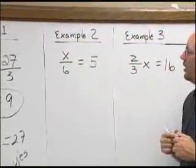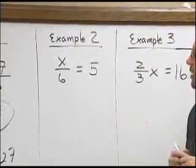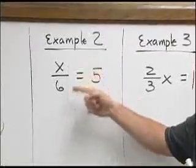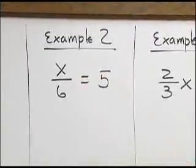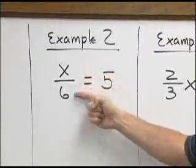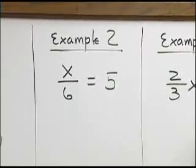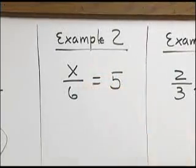Our second example here has a division problem. Although it looks like a fraction, which it is, x over 6, this really signifies that the x is being divided by 6, which is what a fraction is. Numerator divided by denominator.